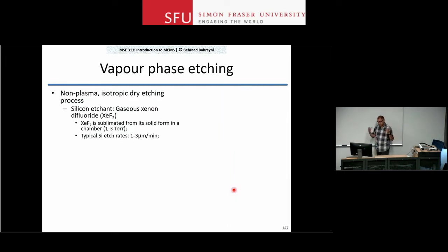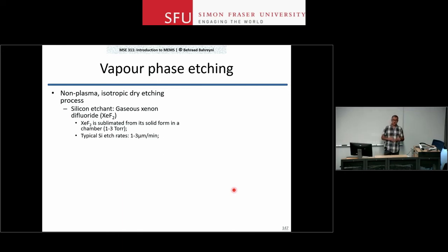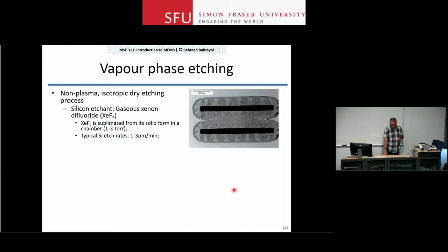Quickly about vapor phase etching: because it's a chemical process, if you use the right chemistry you really do not need any additional energy sources. Things usually happen at room temperature and there is no need for plasma or fancy electronics to motivate the reaction. The etch is isotropic — so for example, if I have two openings in my silicon dioxide layer, the etchant xenon difluoride gets through the openings to the silicon film underneath and goes in all directions at the same rate. You can see sharp edges that create stress concentrations in the film.